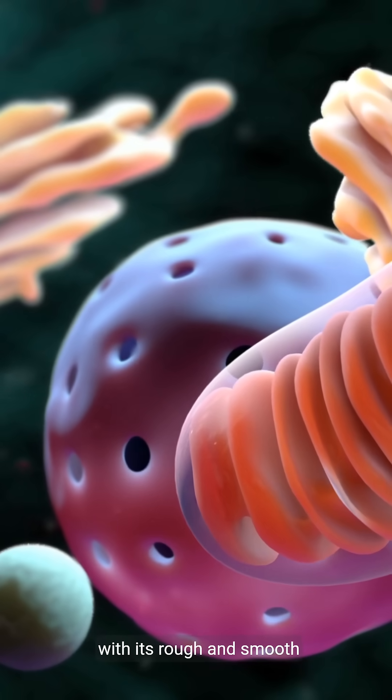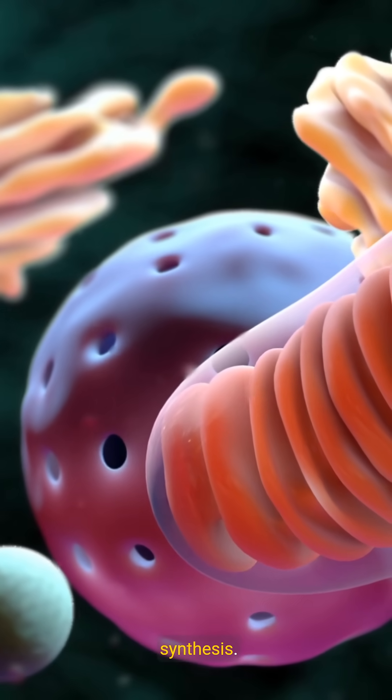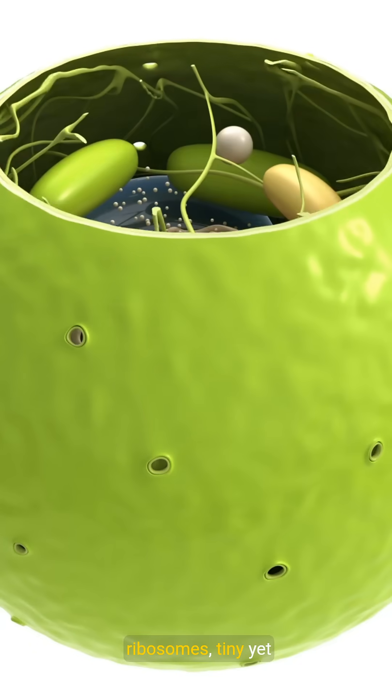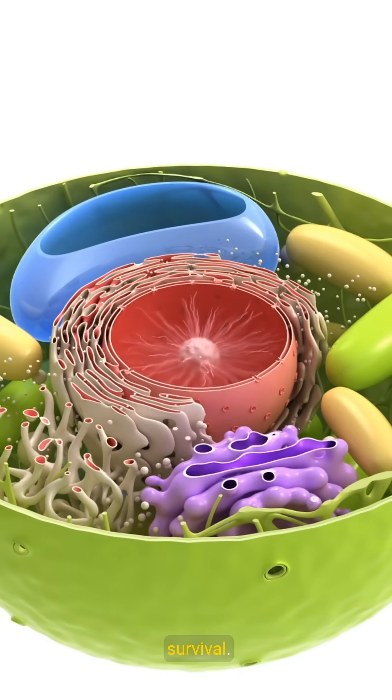The endoplasmic reticulum, with its rough and smooth regions, plays a critical role in protein and lipid synthesis. Let's not forget the ribosomes, tiny yet vital structures that assemble proteins necessary for the cell's survival.